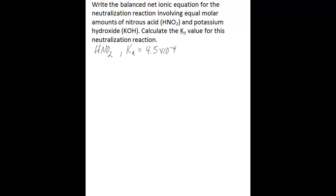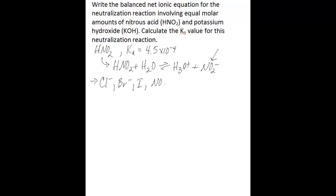A good rule of thumb here is that any acid with a Ka value less than 1 is considered a weak acid. Another indicator is that nitrite, which is the conjugate base of this acid, is not one of the anions that comes from a strong acid. The anions that come from strong monoprotic acids do not react appreciably with water to create any acidity or basicity in your solution. These anions are chloride, bromide, iodide, nitrate, and chlorate.